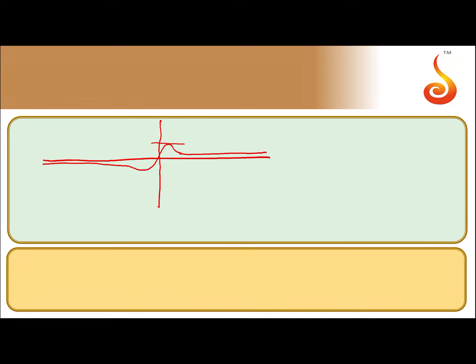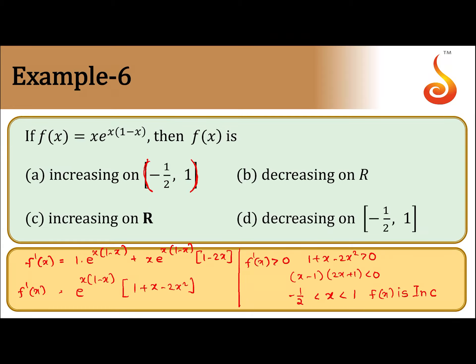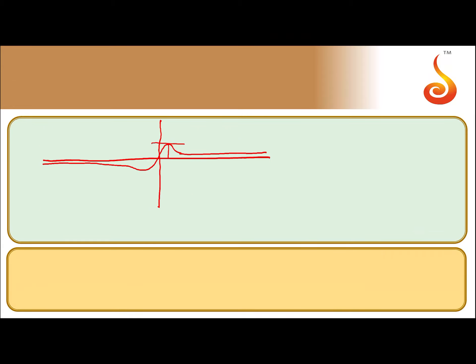So, you get two horizontal tangents at x is equal to 1 as we had got x equal to 1 and x equal to minus 1 by 2. This is 1 and this is minus 1 by 2.